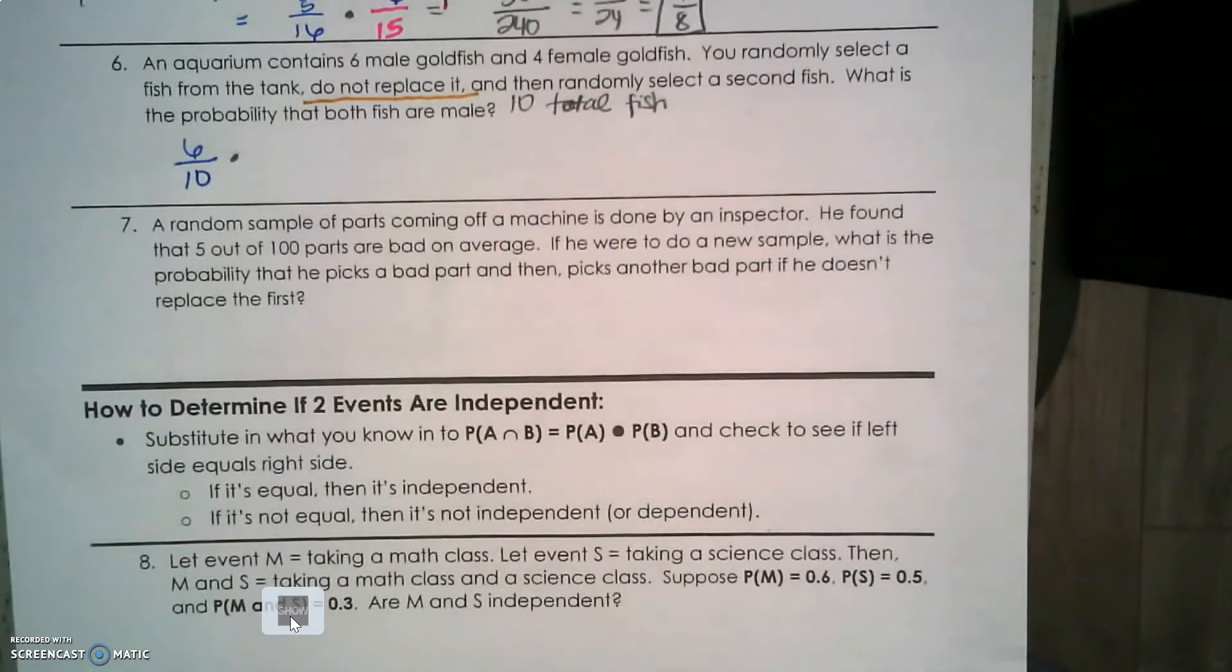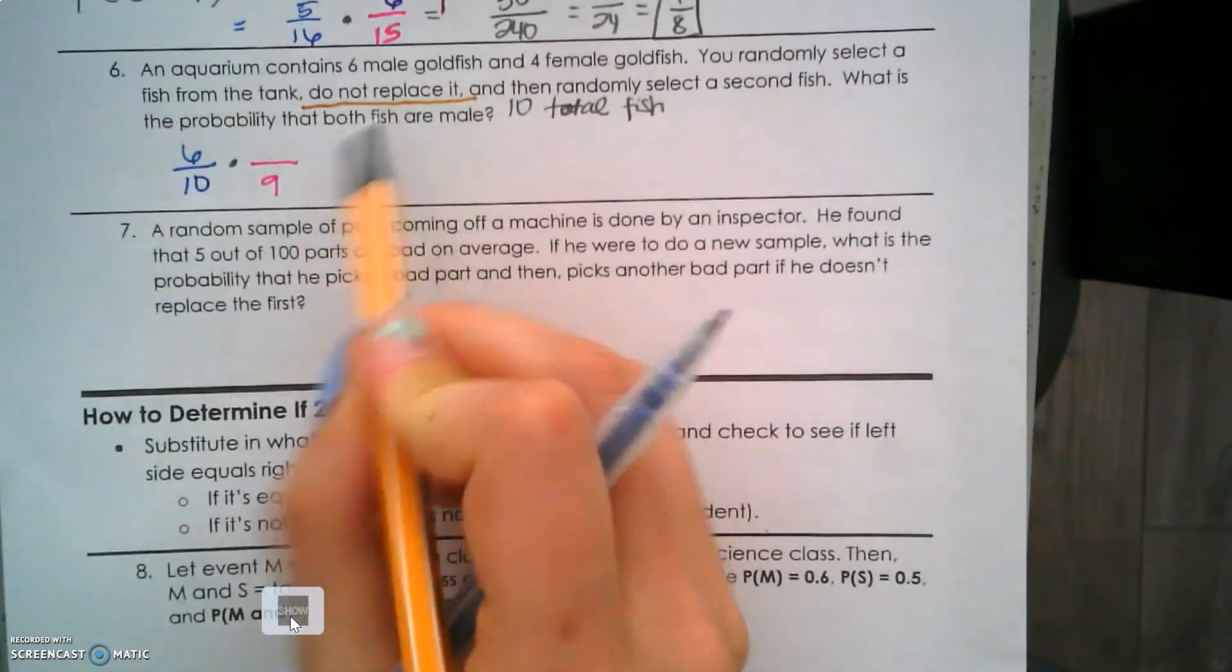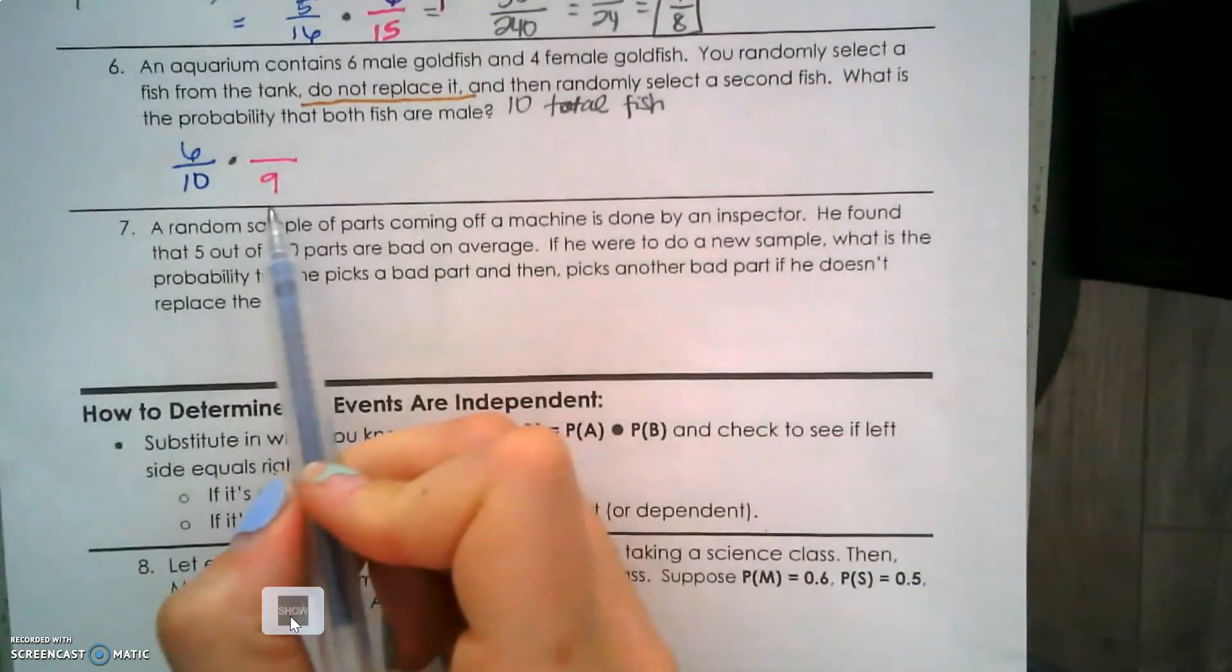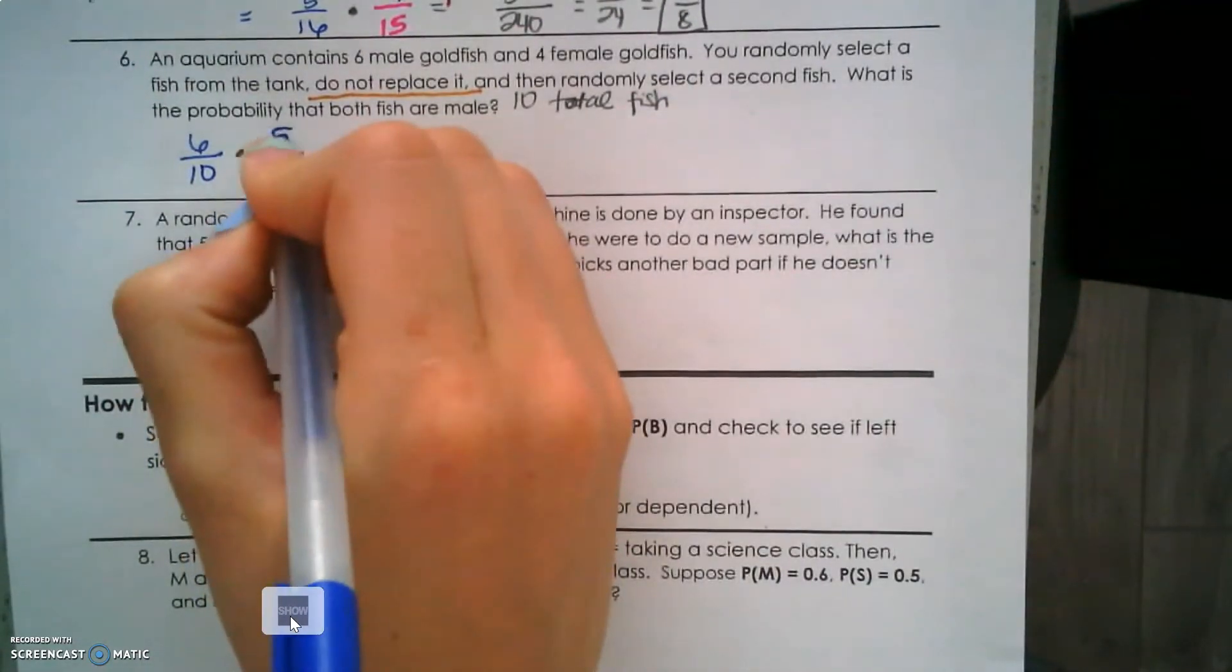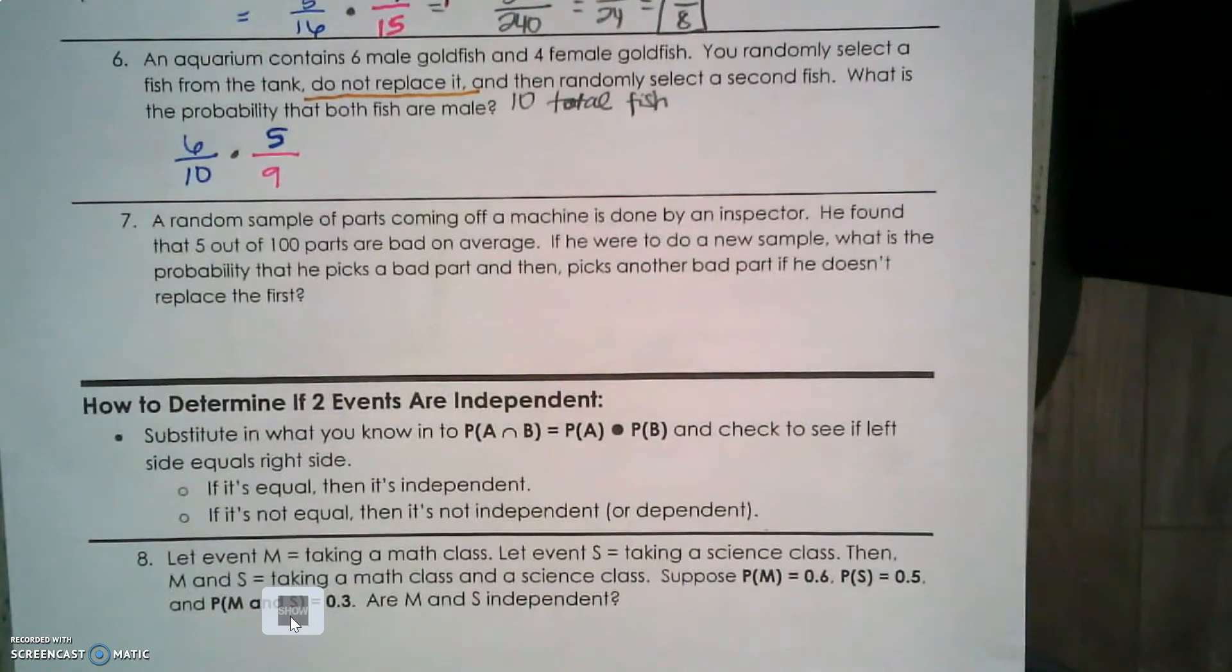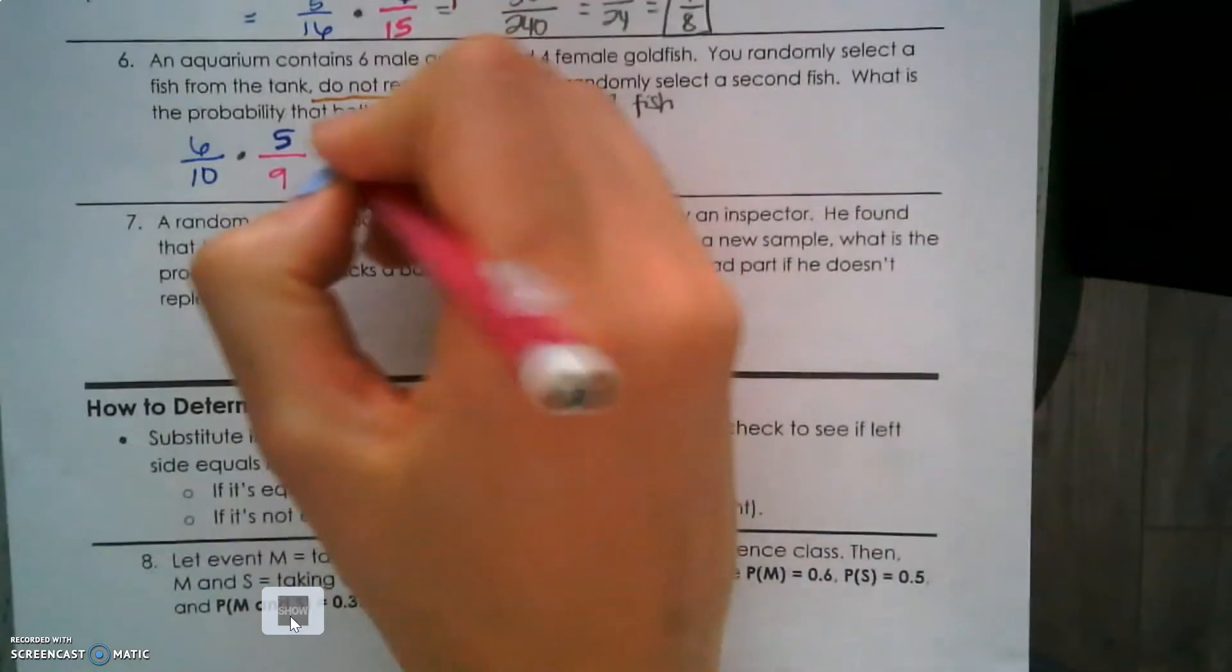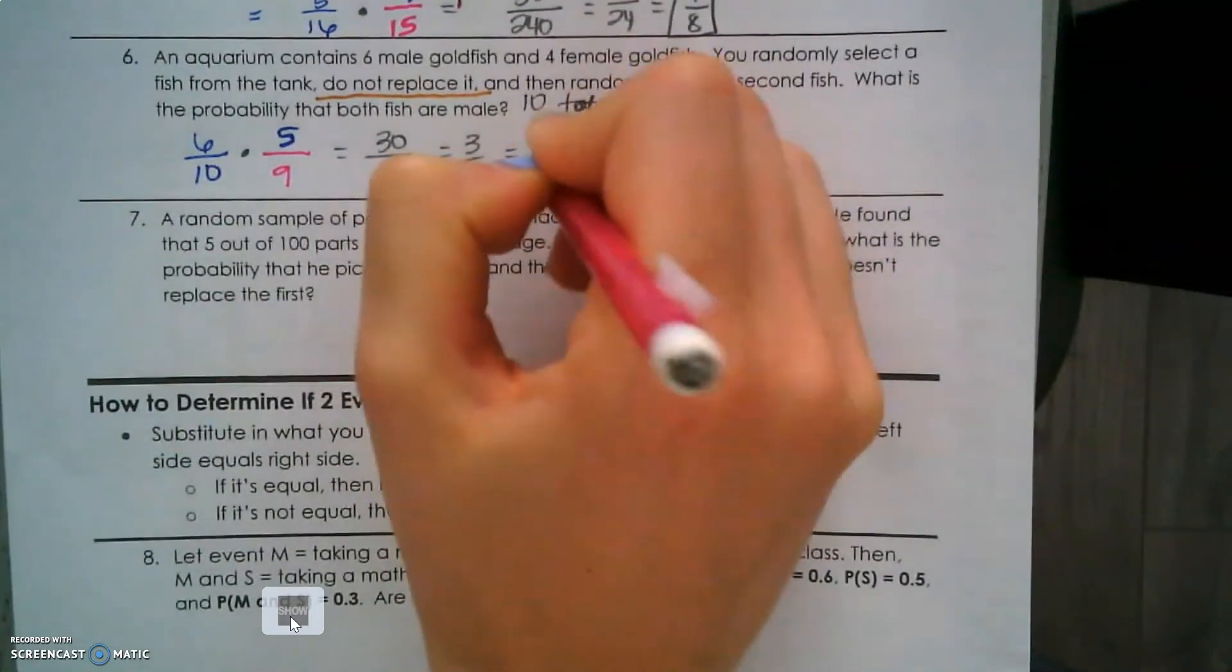So your aquarium now has 9 fish to choose from. Out of those 9 fish, how many are male? Hopefully you answered 5 - I can't have 6 male anymore because I took one out. So I subtract from both my total population and from the males. We multiply: 6/10 × 5/9 = 30/90 = 3/9 = 1/3.